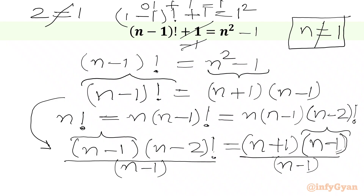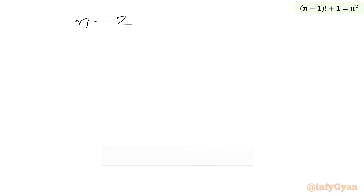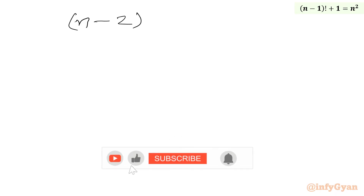Now we can divide and cancel (n minus 1) from both sides. So we will get (n minus 2) factorial equal to (n plus 1).